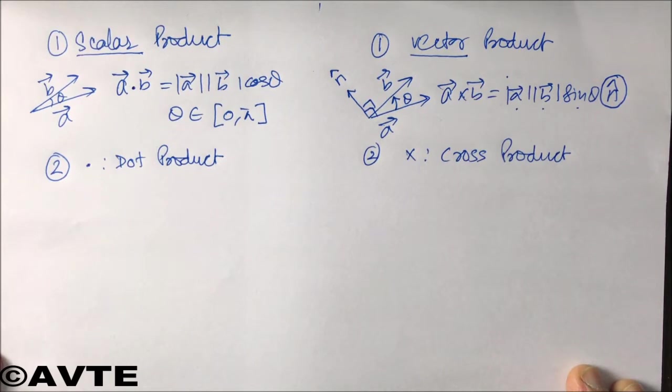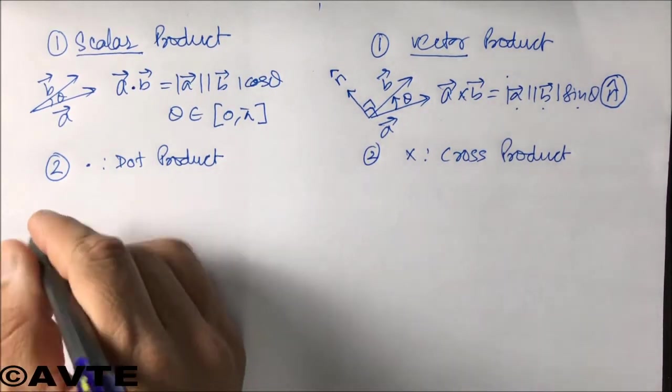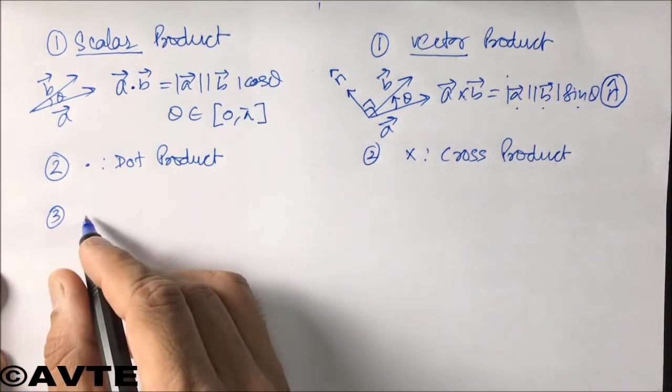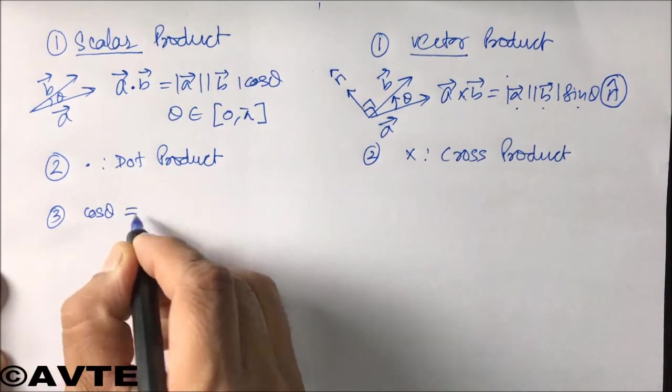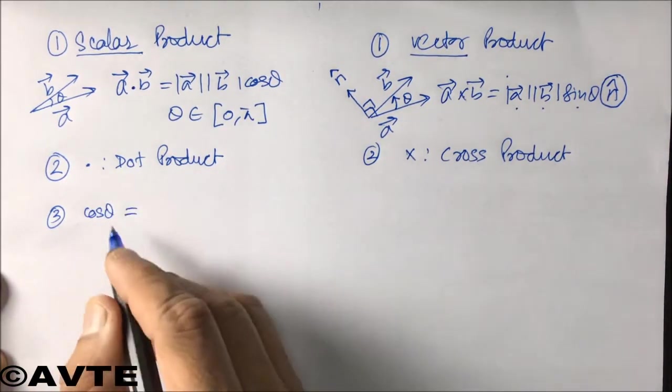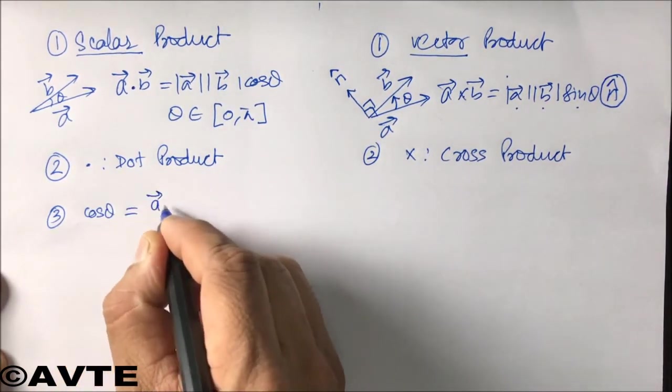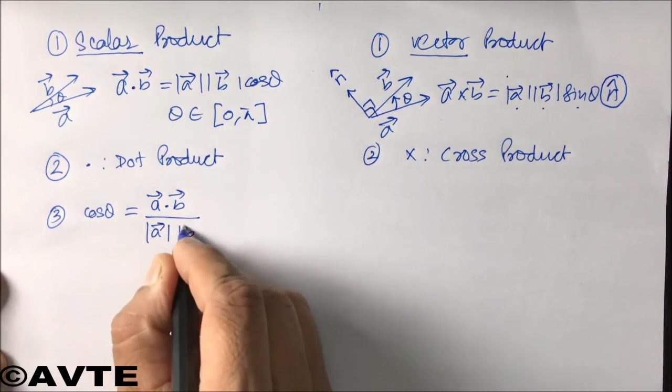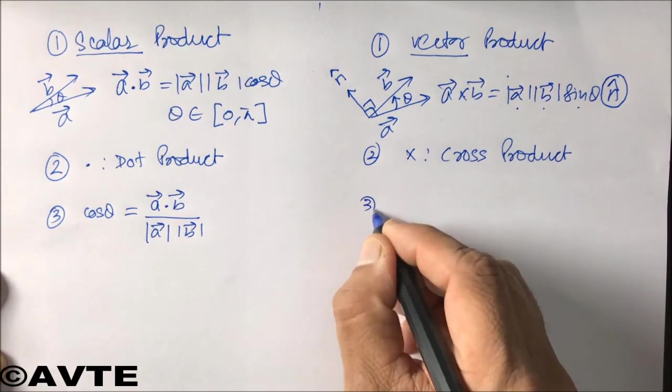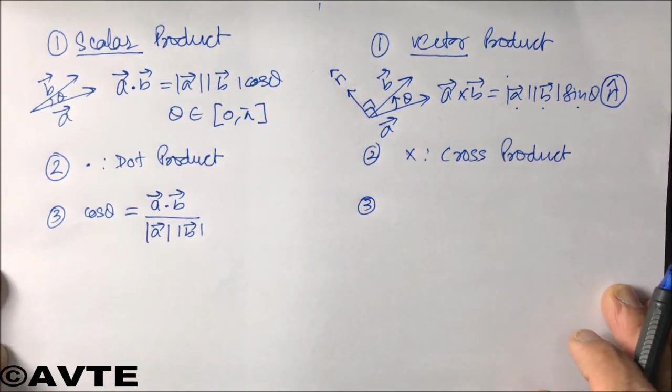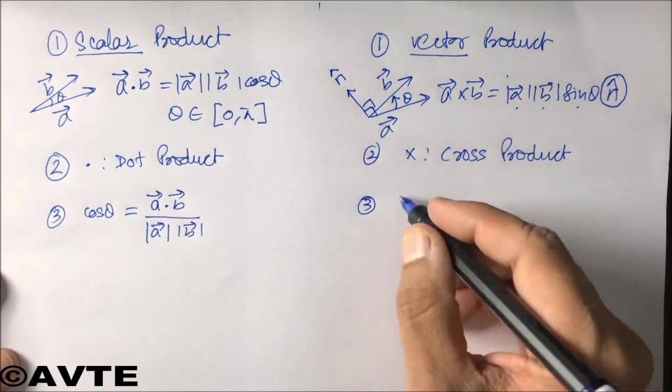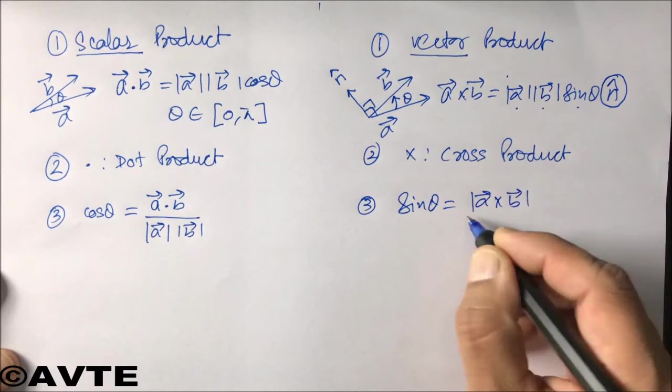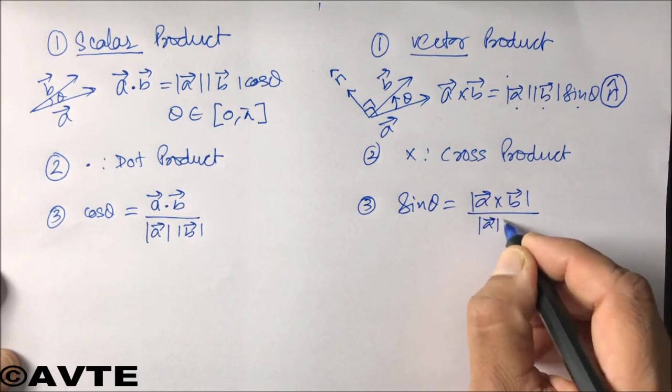Well, the formula is using cos theta. So if we have to find cos theta, the formula becomes a dot b divided by mod a mod b. Whereas if we have to find the angle through the vector product, it is the sine theta, and the formula becomes mod of a cross b over mod a mod b.